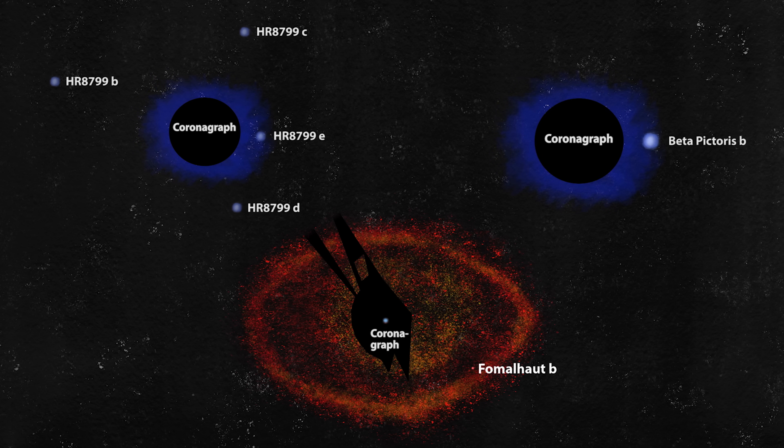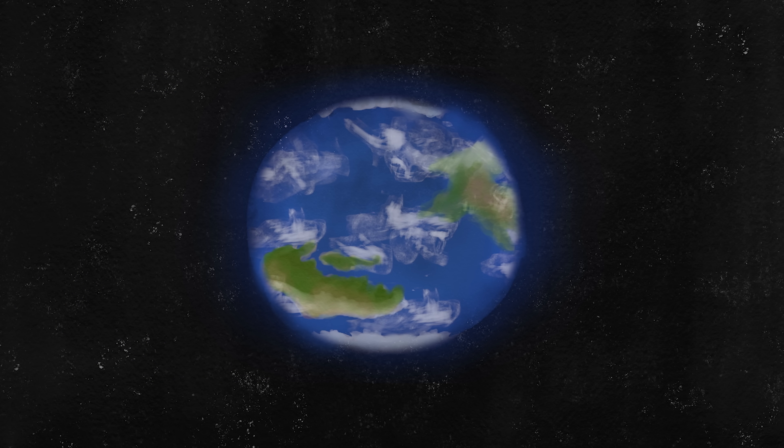These fuzzy dots are a few examples of the best direct images that we've got. And these are all gas giants like Jupiter. What we don't have is a really good image of an Earth-like exoplanet.